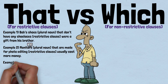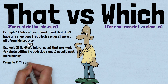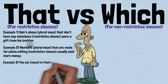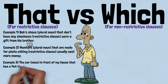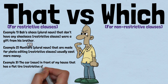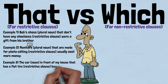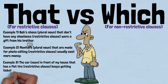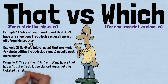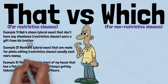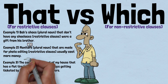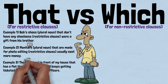Example 3: 'The car in front of my house that has a flat tire keeps getting ticketed by law enforcement officers.' In this example, we understand that there are many cars in front of the speaker's house, so the word 'that' is used to identify the one with a flat tire as the car being frequently ticketed.